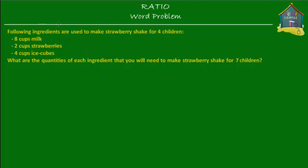The following ingredients are used to make strawberry shake for four children: eight cups of milk, two cups of strawberries, four cups of ice cubes. What are the quantities of each ingredient that you will need to make strawberry shake for seven children?